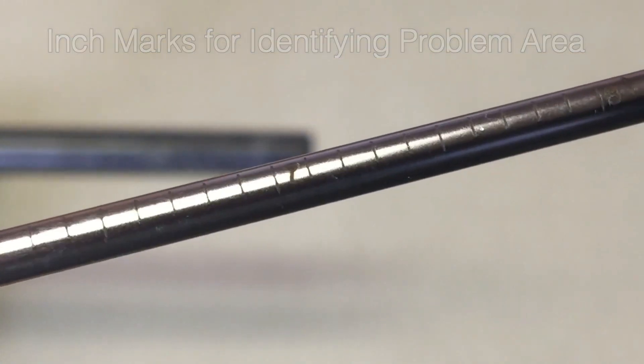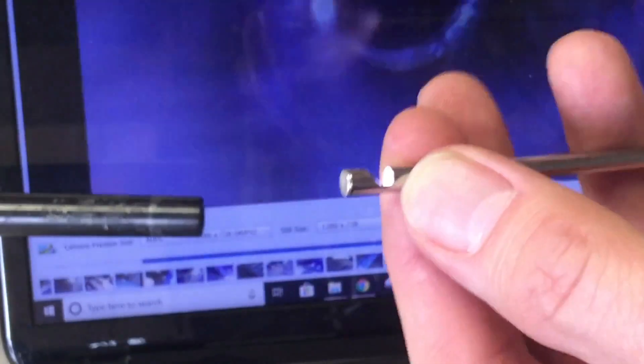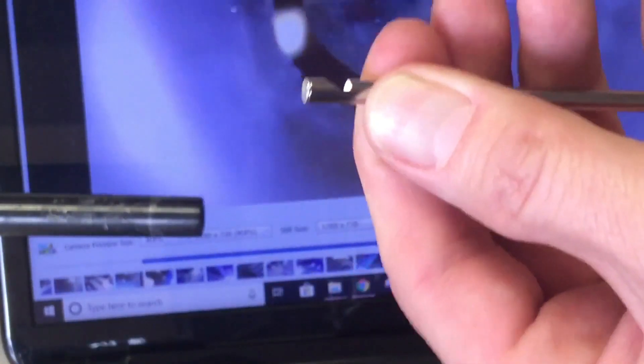The GB Series Boroscopes feature a small 4-millimeter insertion tube complete with a mirror attachment for 90-degree viewing of the barrel walls.